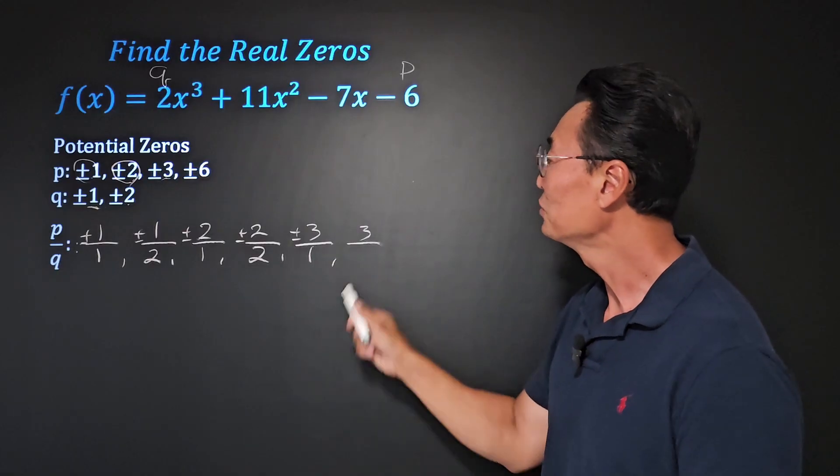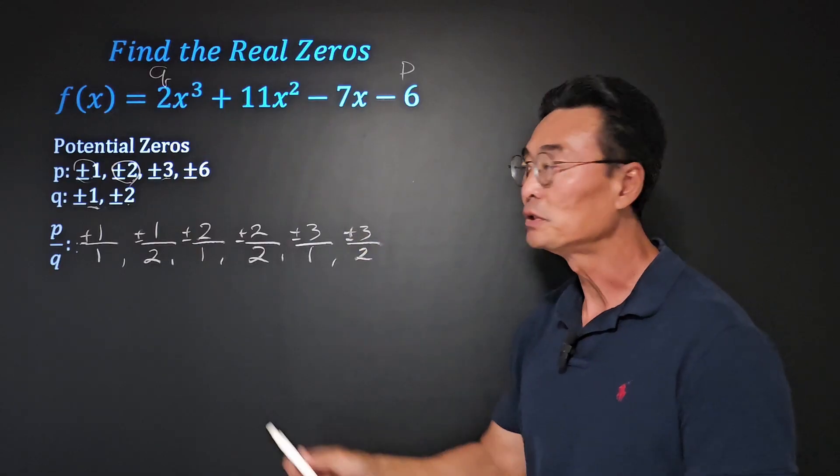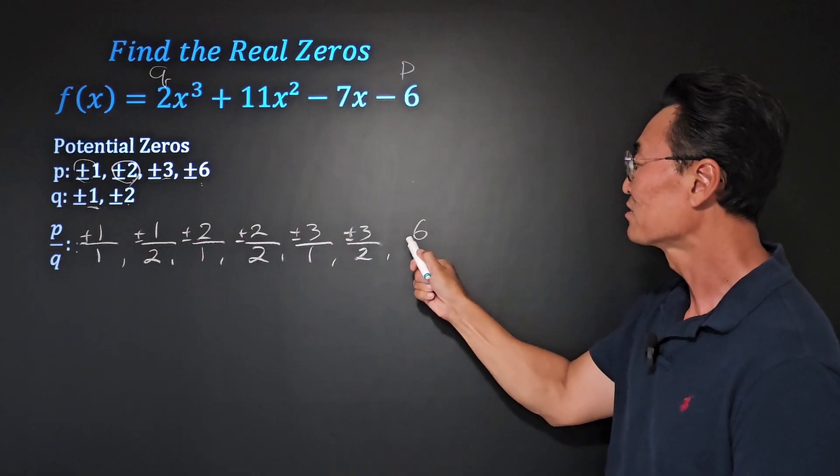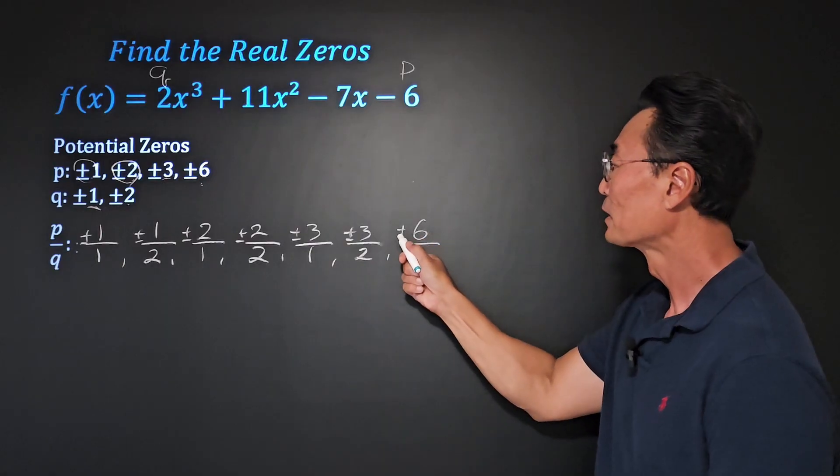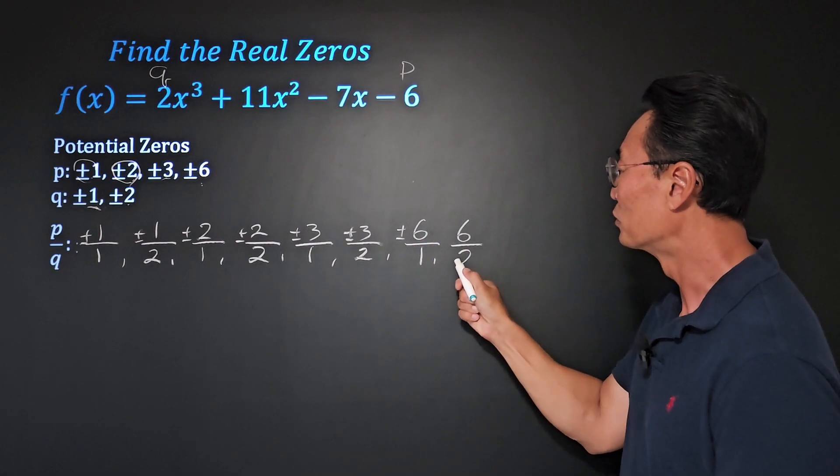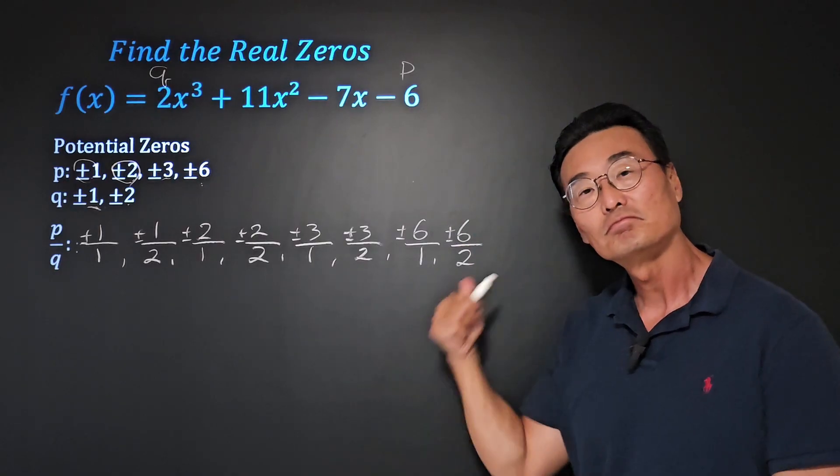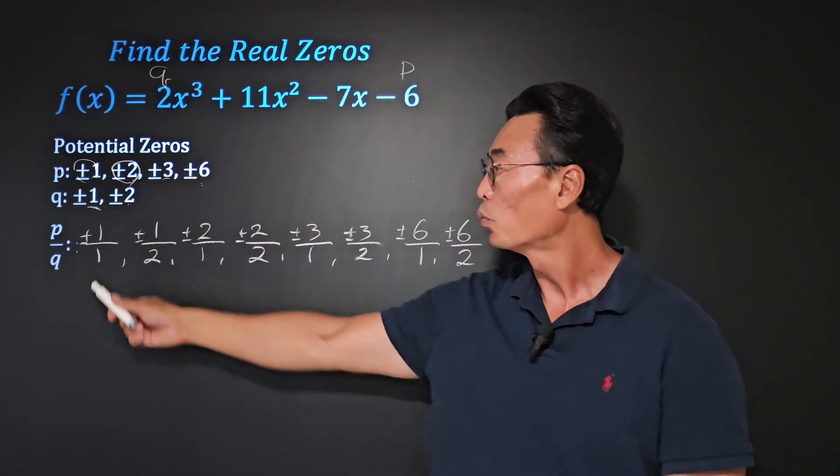Continuing, let's change the p into 3. Q will be 1. Again, when p is 3, q is going to be 2. And then the last p we need to do is the 6. So if p is 6, q will use the first one over the 1, then lastly 6 over 2 is going to be our p over q.